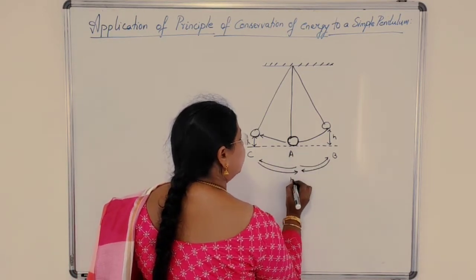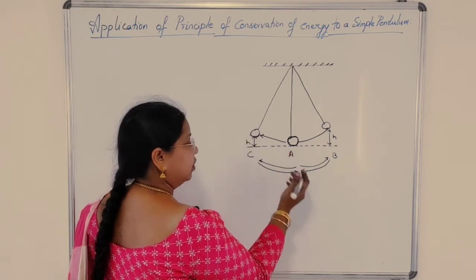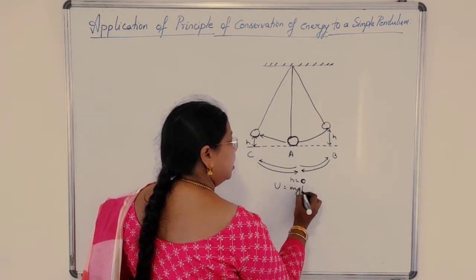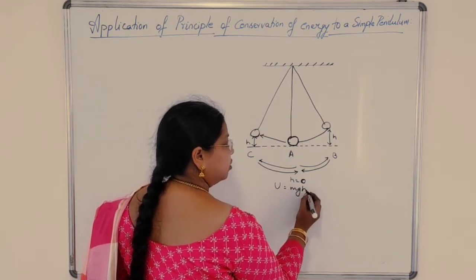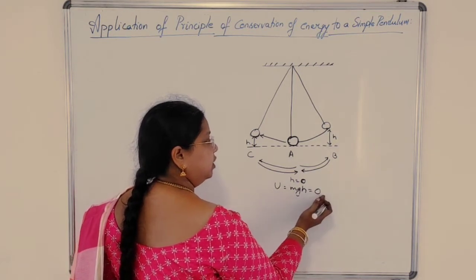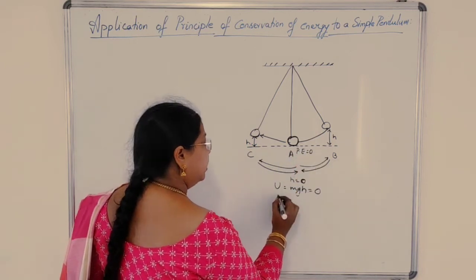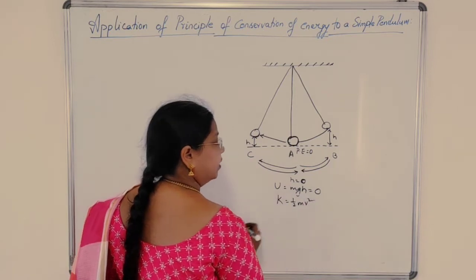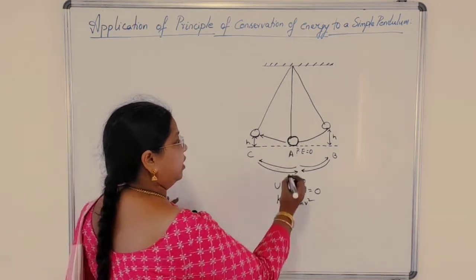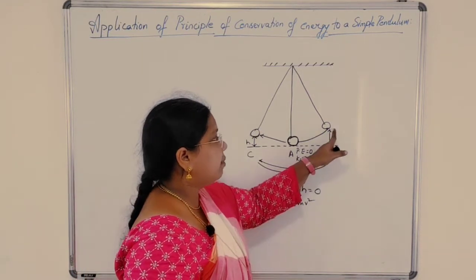The height H is equal to 0 at position A — it is very clear from the picture. When height is equal to 0, the potential energy U = MgH becomes MgH × 0 = 0. So potential energy is 0 at position A. Therefore your kinetic energy equals ½mv² at this position.